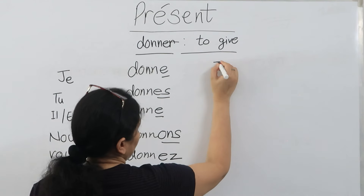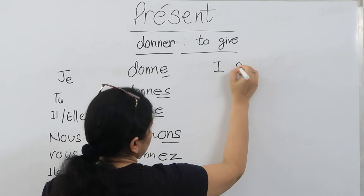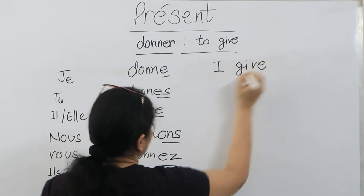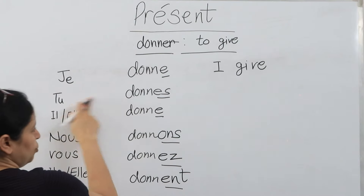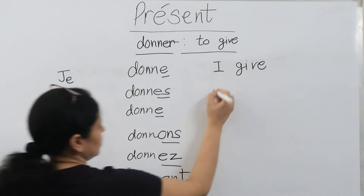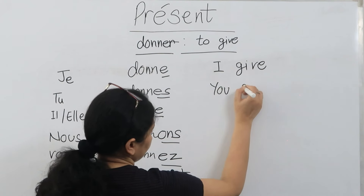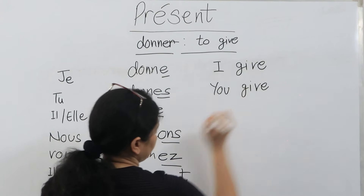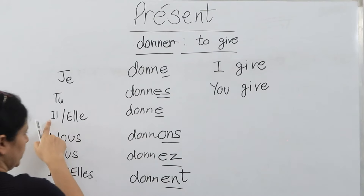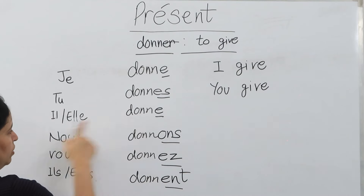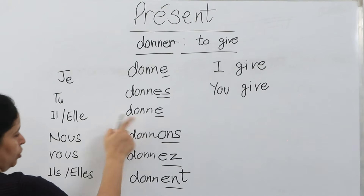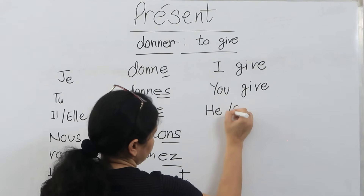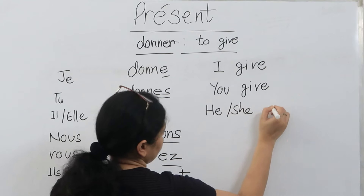Now, 'je donne' means 'I give.' 'Tu donnes' means 'you give.' 'Il donne' or 'elle donne' means 'he gives' or 'she gives.'